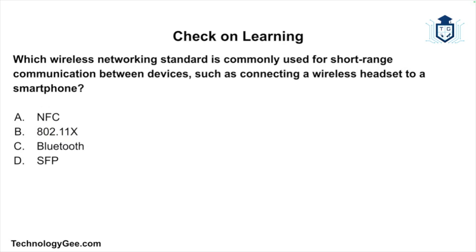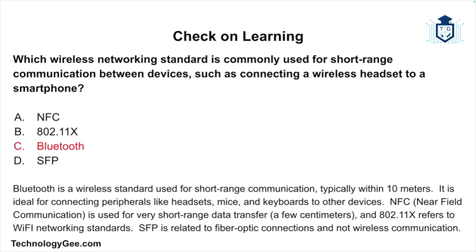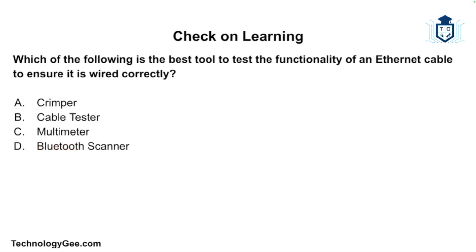Next question: Which wireless networking standard is commonly used for short-range communication between devices such as connecting a wireless headset to a smartphone — NFC, 802.11x, Bluetooth, or SFP? The correct answer is Bluetooth. Bluetooth is a wireless standard used for short-range communication, typically within 10 meters, ideal for connecting peripherals like headsets, mice, and keyboards. NFC is used for very short-range data transfers, 802.11x refers to Wi-Fi networking standards, and SFP is related to fiber optic connections.